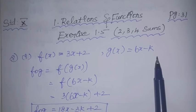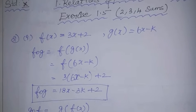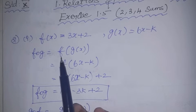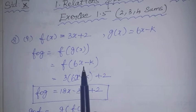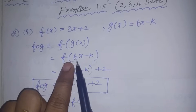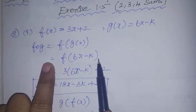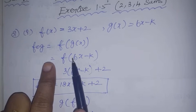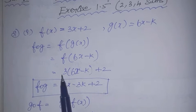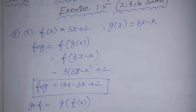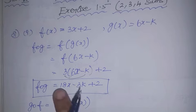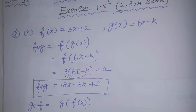Now we will find f∘g. f of g of x means substituting g(x) into f. So f(6x - k) equals 3 into (6x - k) plus 2. Multiplying: 3 × 6 = 18x, 3 × (-k) = -3k, plus 2. So f∘g = 18x - 3k + 2.